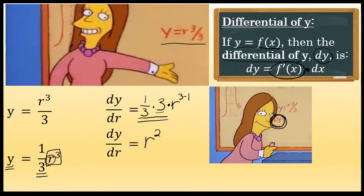In this problem, the second variable is R, but this definition can still be applied. We started with Y equals R to the third over three, and we found that that derivative was equal to R squared. So D-Y, the differential of Y, is equal to that derivative, R squared,